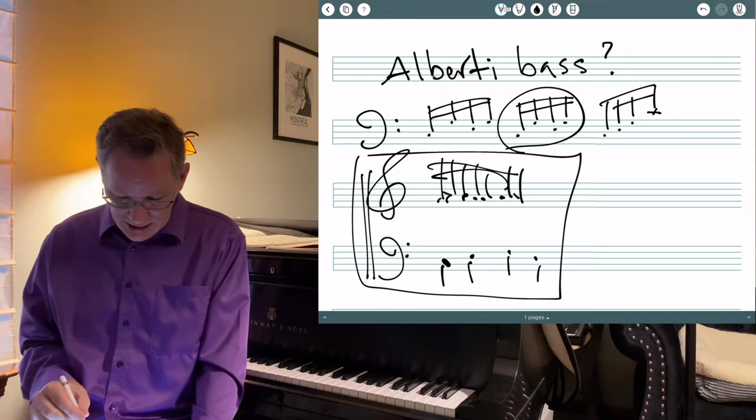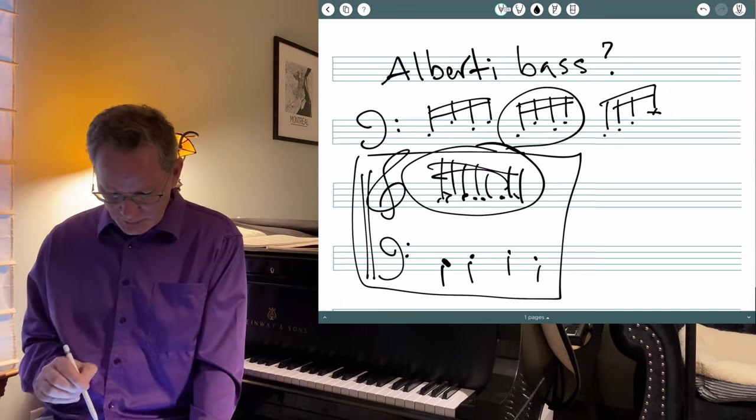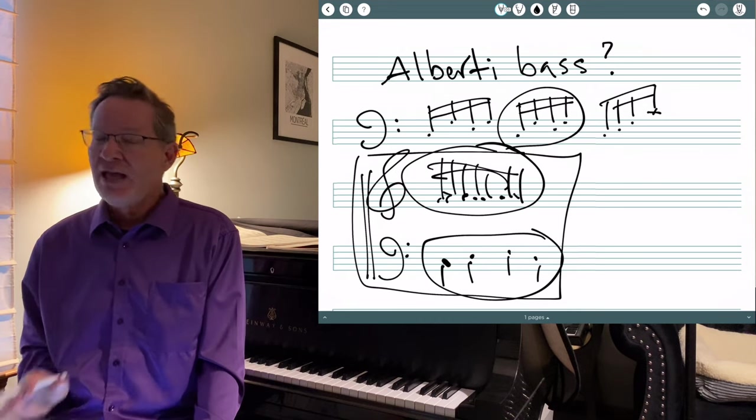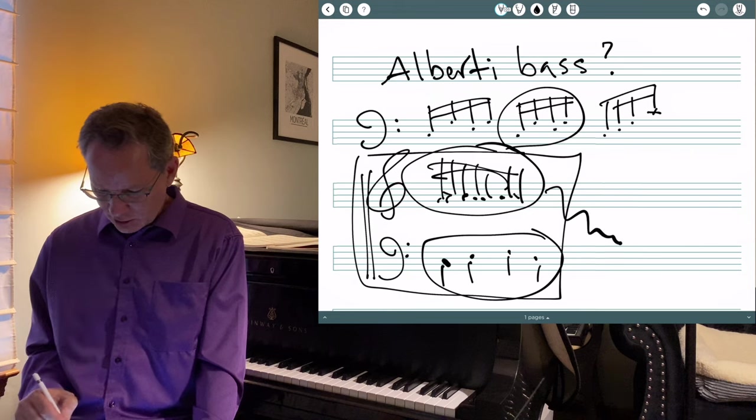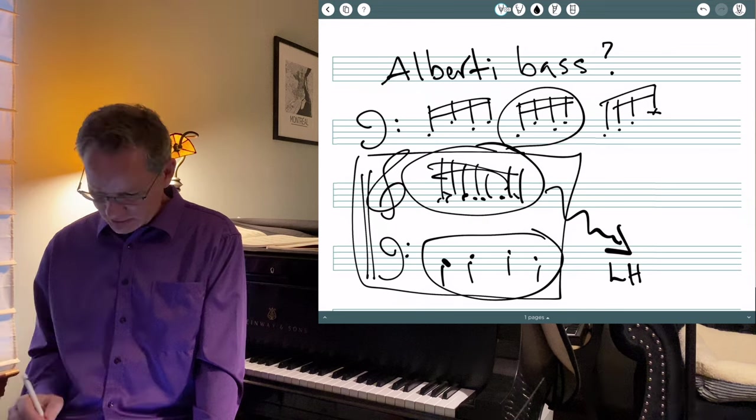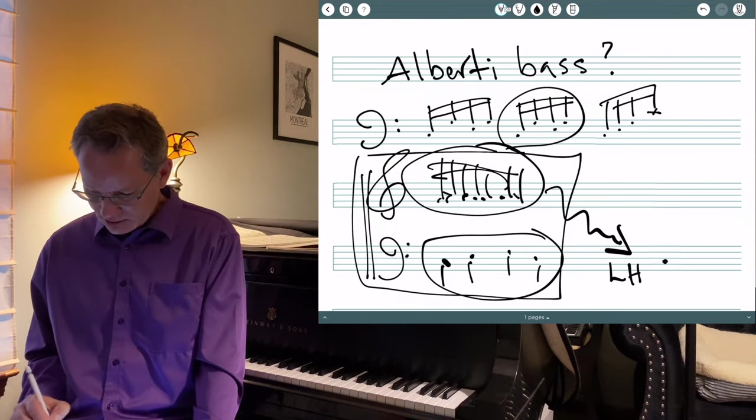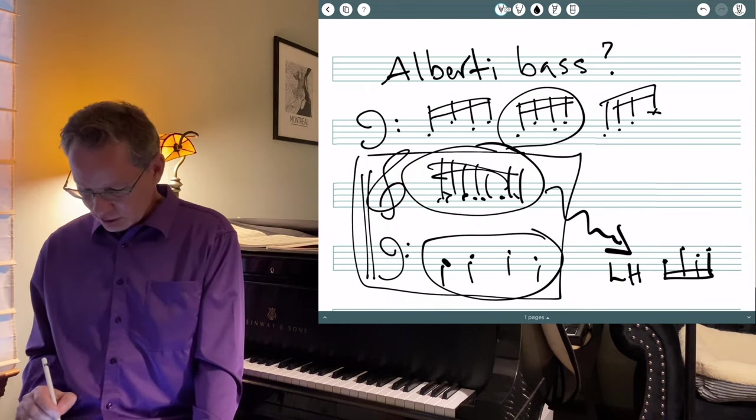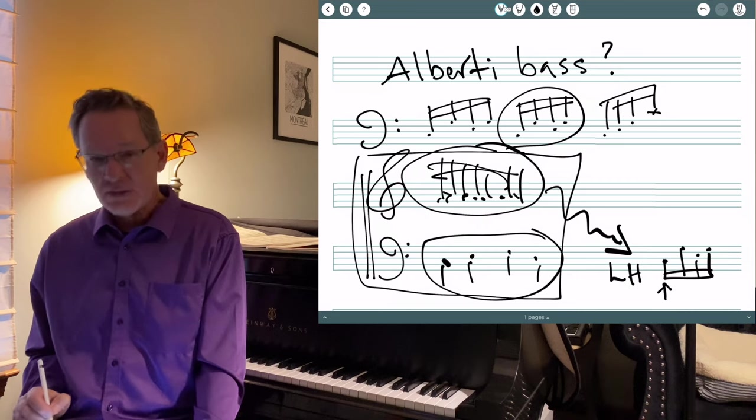So, if you take this busier upper accompaniment and pulsing lower accompaniment, and you have to fit it all into the left hand, the Alberti bass is the natural way to do that. Because you get the bass, the lowest note, is on the strongest beat.